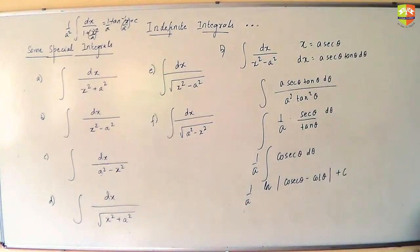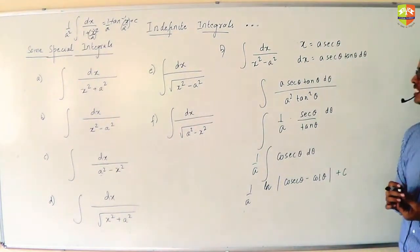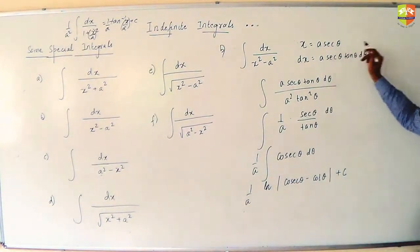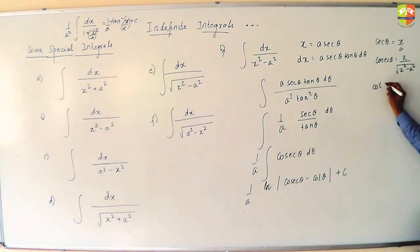And cosec theta d theta integration is ln mod cosec theta minus cot theta plus C. Now I cannot leave my answer in terms of theta because theta is something which I have introduced in the problem by substituting x as a sec theta. So if sec theta is x by a, what is cosec theta then? Cosec theta would be a by root of x squared minus a squared.